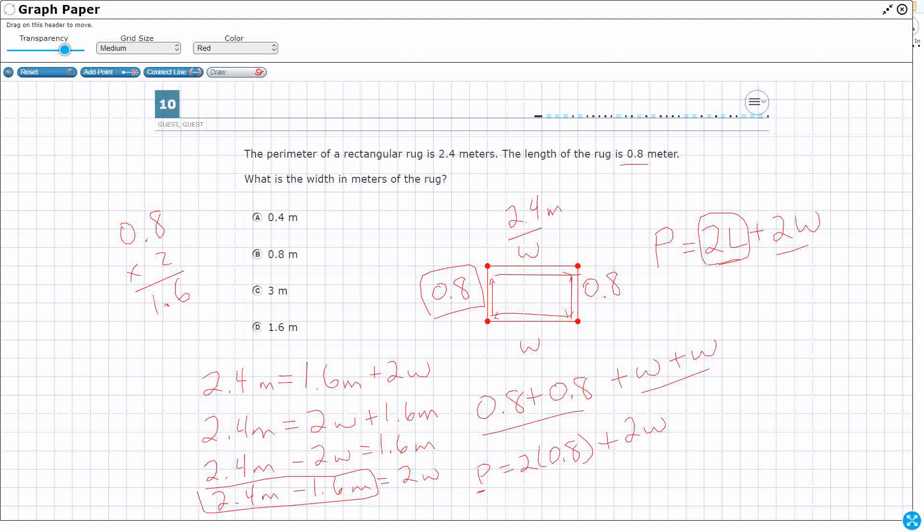I'm using that subtraction fact family. So I need 2.4 minus 1.6, right? That's going to be 0.8. That's not the answer.